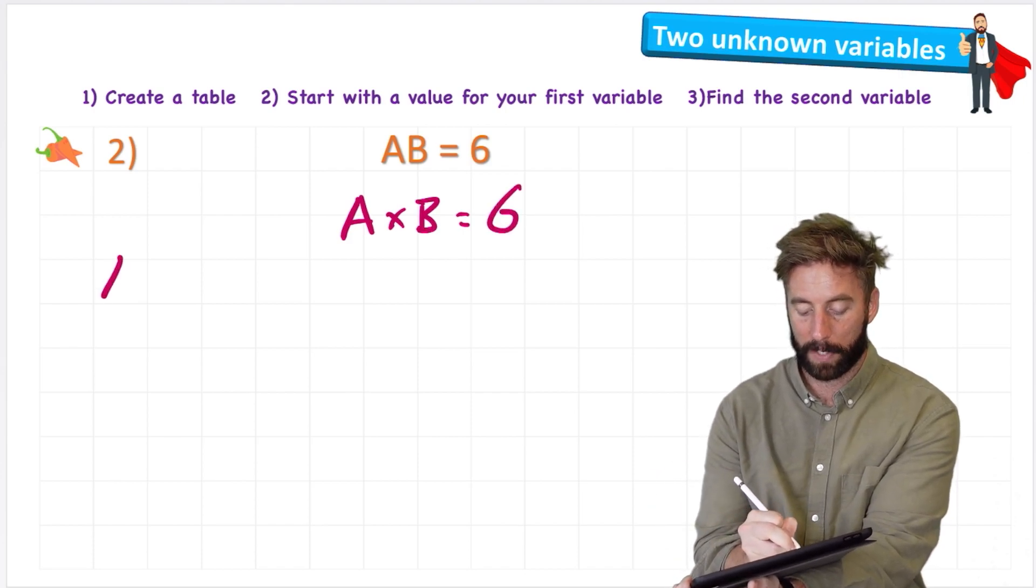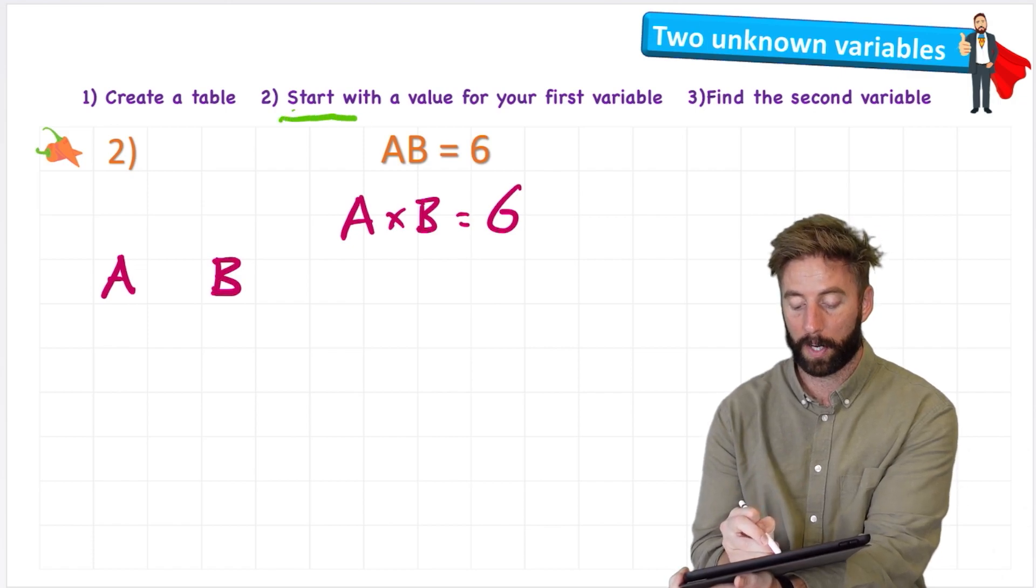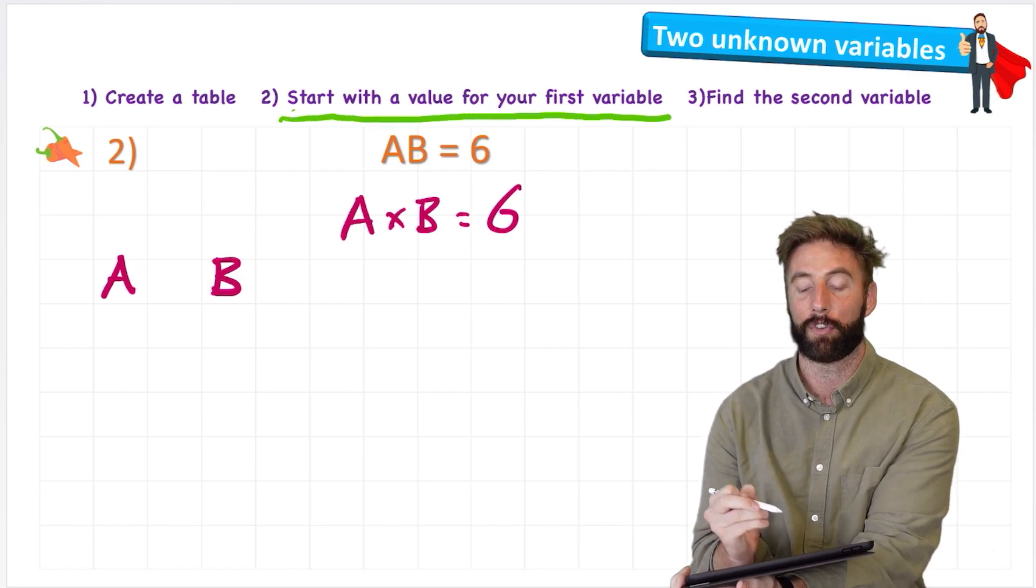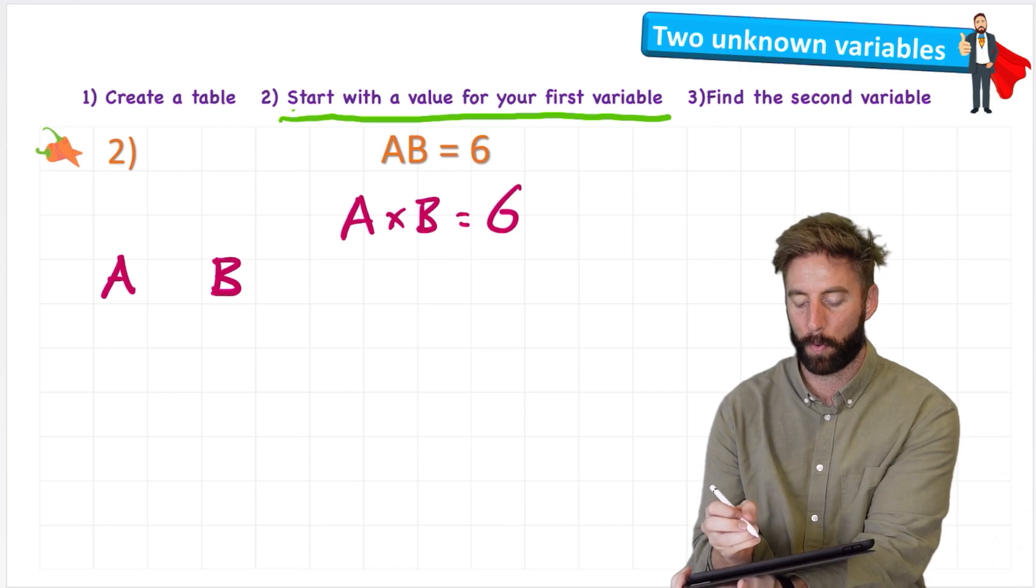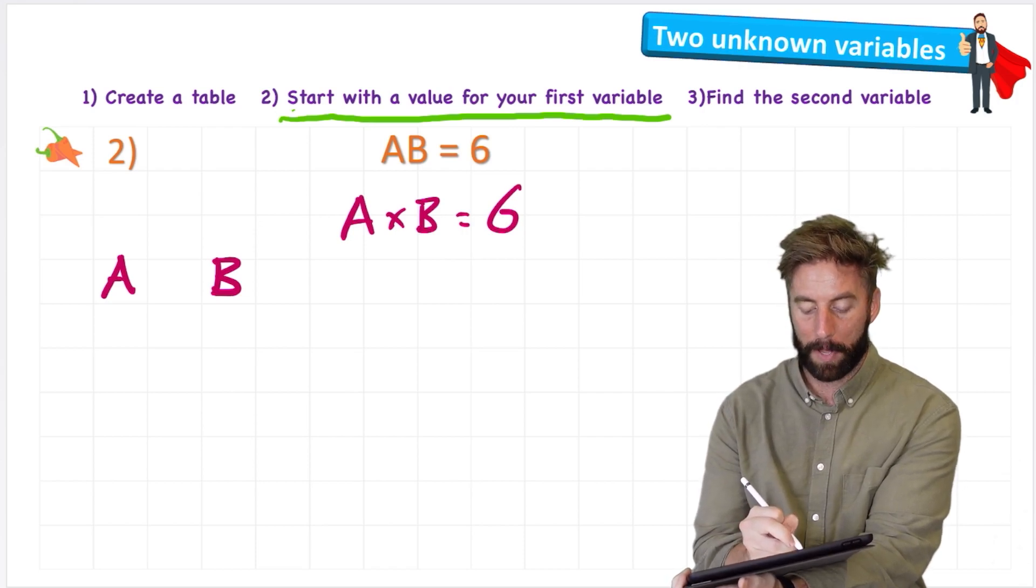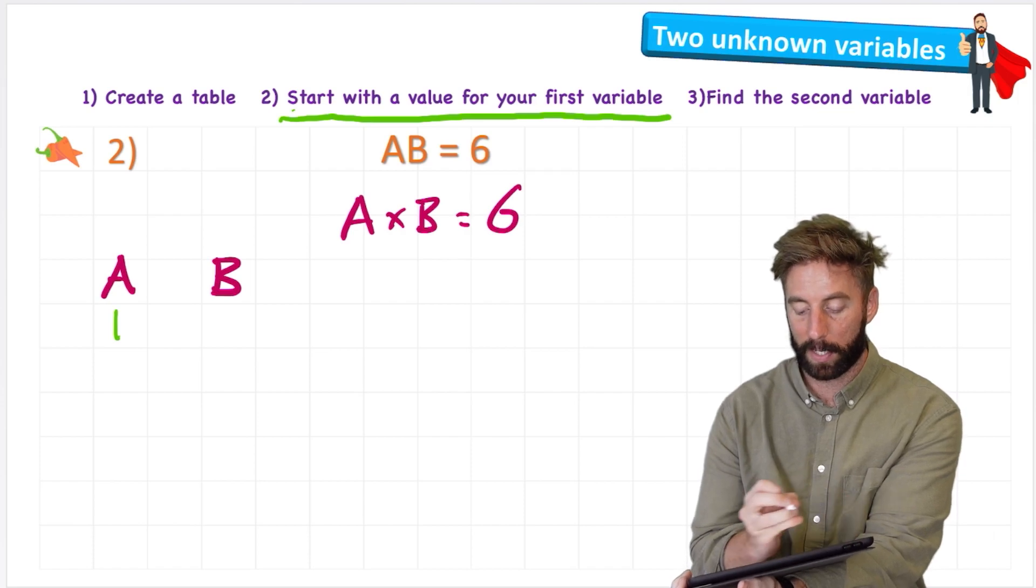So again, let's build our table. Let's have A and B. And let's look at step 2. We're going to start by creating a value for A or B, but we'll do A. So in this case, let's start with A being 1.